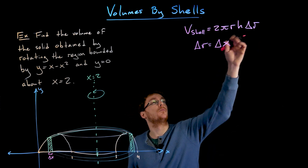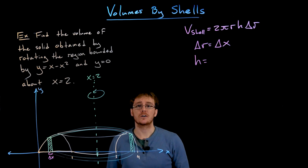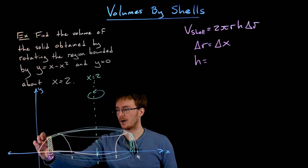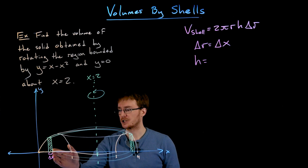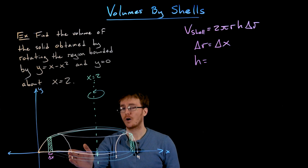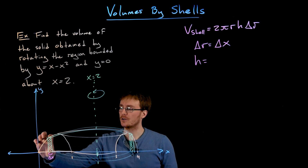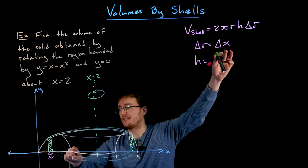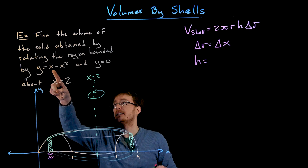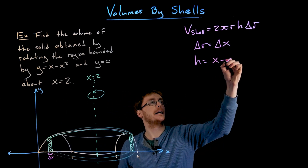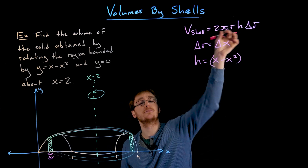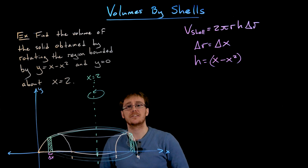Working from right to left, the next piece is the height of each cylindrical shell. The height corresponds to the height of our approximating rectangle, which changes as x changes throughout the region. Each shell's height is given by the y value of the top curve, which as a function of x is x minus x squared. We put that in parentheses to avoid distribution errors when substituting into the formula.